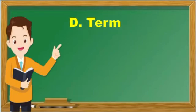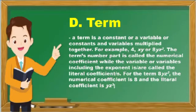Term: A term is a constant or a variable or constants and variables multiplied together. For example, 4, xy, or 8yz cube.